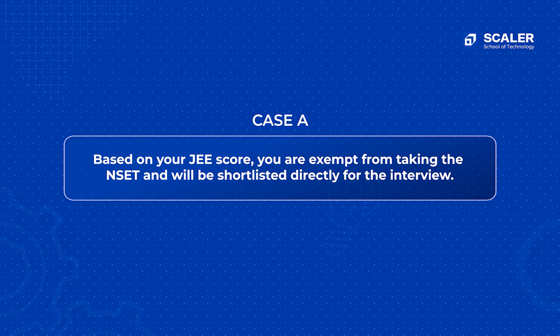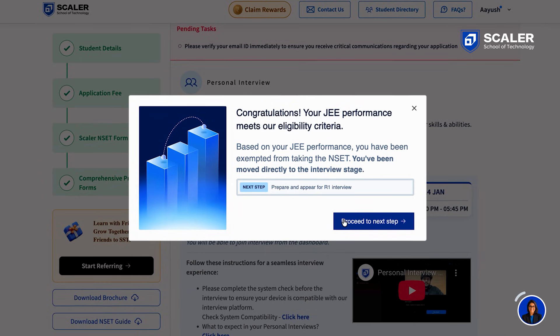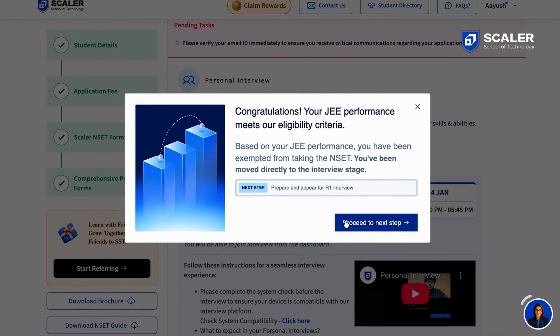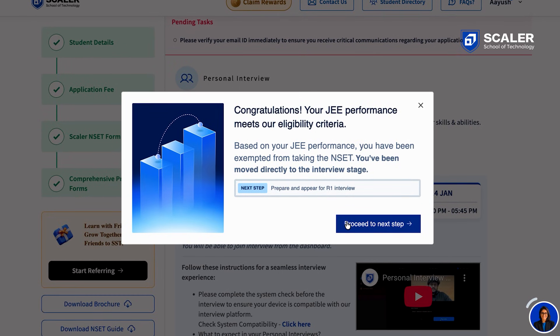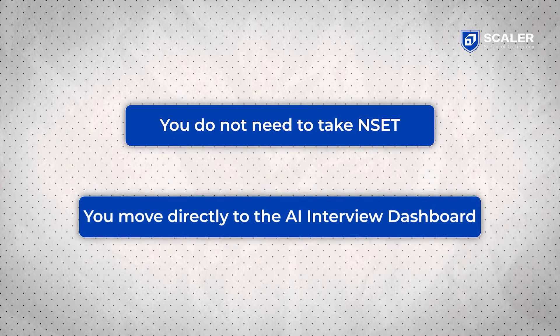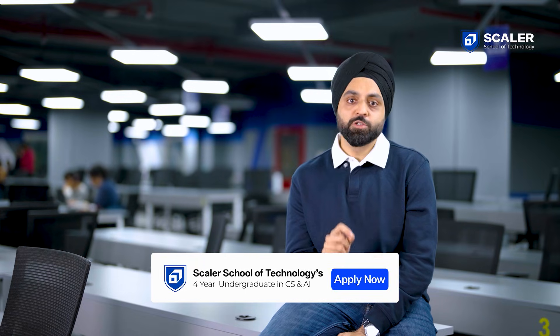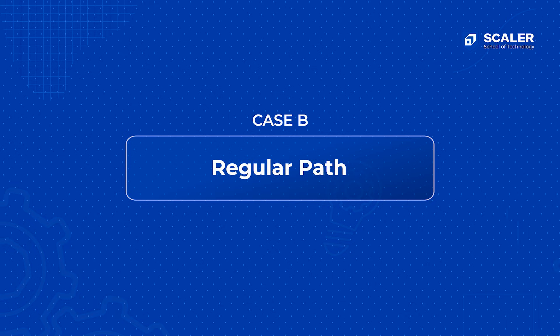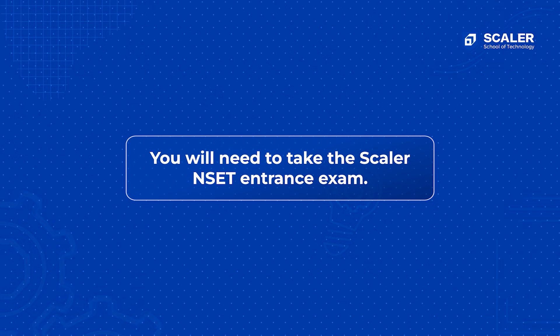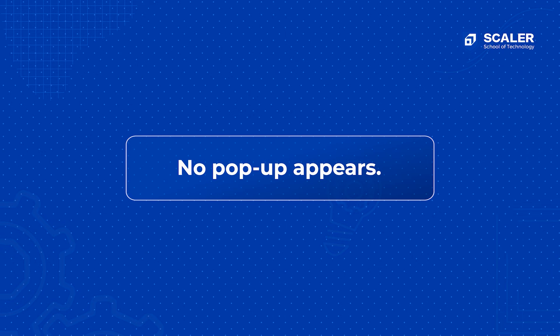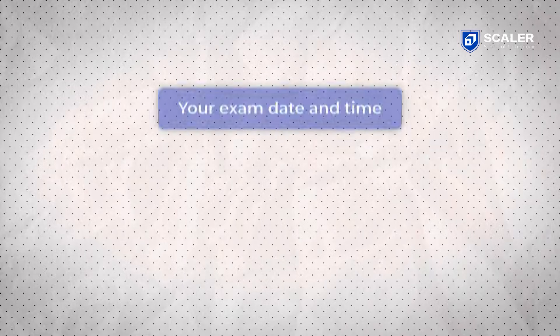Case 1: based on your JEE score, you are exempt from taking the NSET and will be shortlisted for interviews directly. You will see a pop-up saying: 'Congratulations, you've been exempted from NSET and shortlisted directly for Round 1 interview.' You move directly to the AI interview dashboard. You are exempt only from the entrance test because you have demonstrated excellence in an exam like JEE. The other scenario is the default path, which means you will need to take the Scalar NSET entrance exam. No pop-up appears in this case — you are taken directly to the NSET dashboard where you will see your exam date and time, mock tests, and instructions. Most students will come through this route.